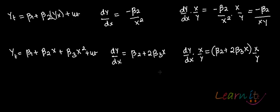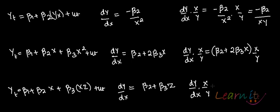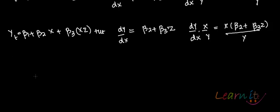If you have an interaction model: yt = β1 + β2*x + β3*xz + ut, and you want to find out the marginal effect, dy/dx = β2 + β3*z. Elasticity is (dy/dx) * (x/y), which comes out to be x*(β2 + β3*z)/y.